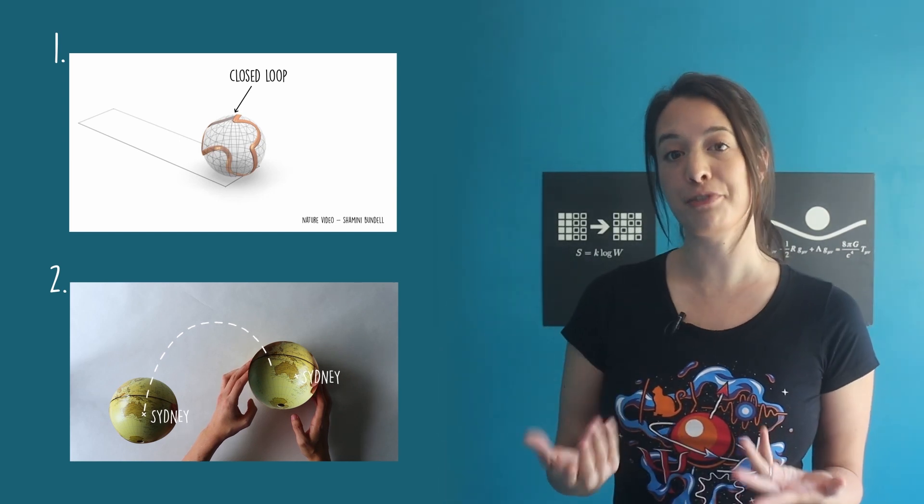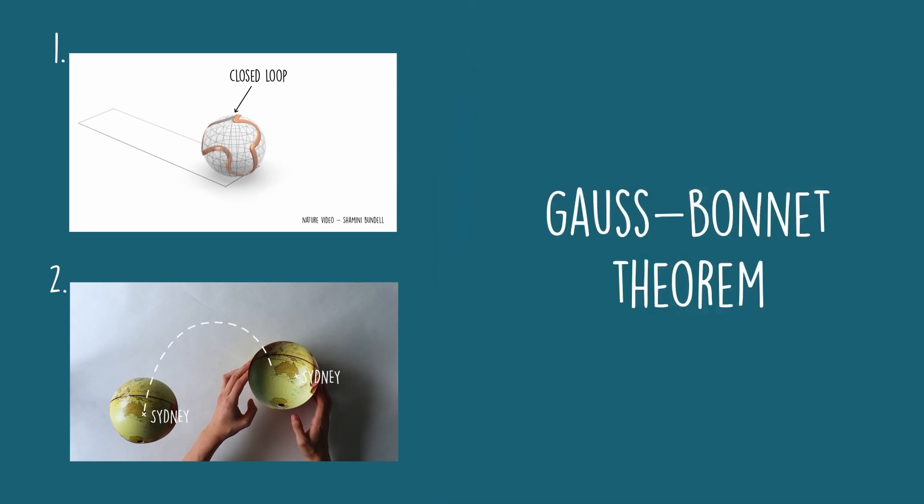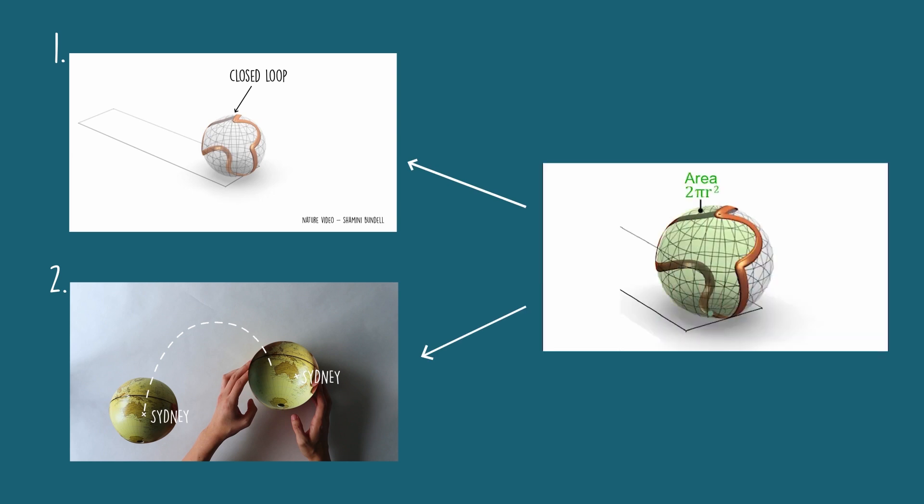Due to a theorem in differential geometry called the Gauss-Bonnet theorem, these two conditions can only happen when the trajectoid path cuts the surface area of the sphere in exactly half.